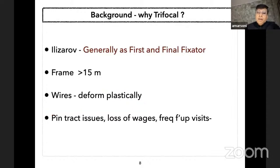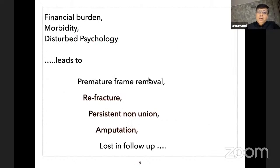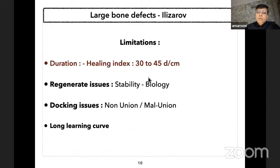Whenever we use a conventional external fixator it is basically a span-scan-and-plant strategy and a temporary method. But when we use Ilizarov it is generally the first and final fixator. When duration in frame exceeds 15 months, wire deforms plastically; there are pin track issues, loss of wages, follow-up visits, and financial burden. This often leads to premature frame removal, refracture post-frame removal, persistent non-union, and at times amputation.